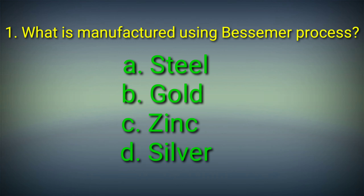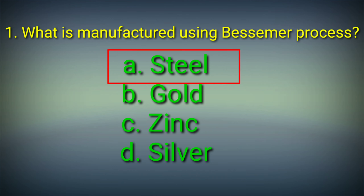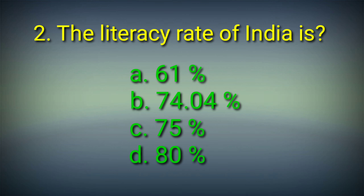First question: What is manufactured using the Bessemer process? Options: A. Steel, B. Gold, C. Zinc, D. Silver. Answer: Option A. Steel. Steel is manufactured using the Bessemer process.